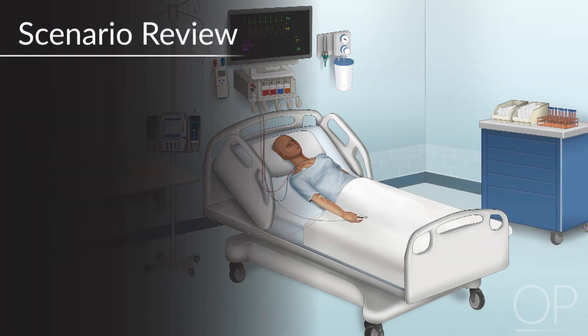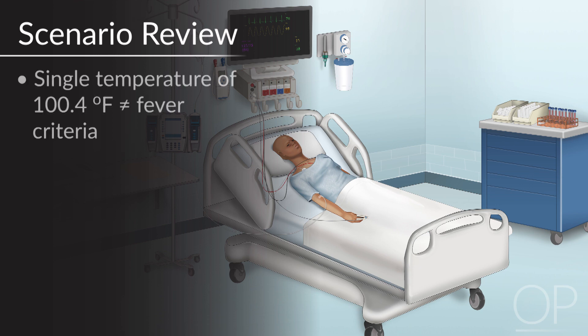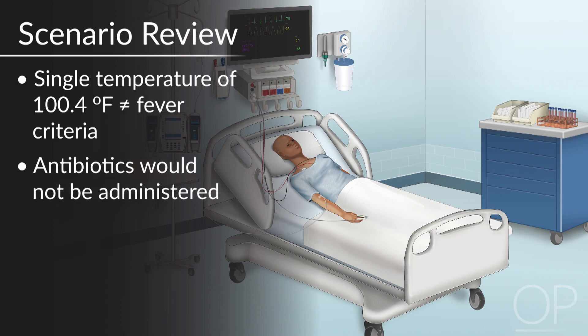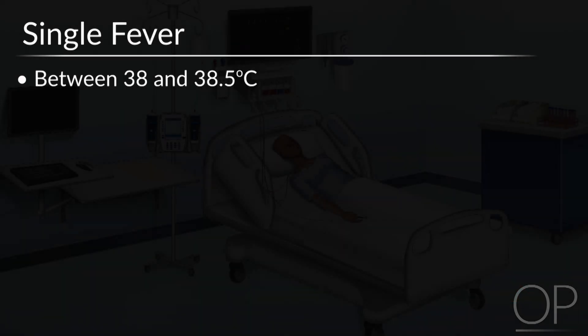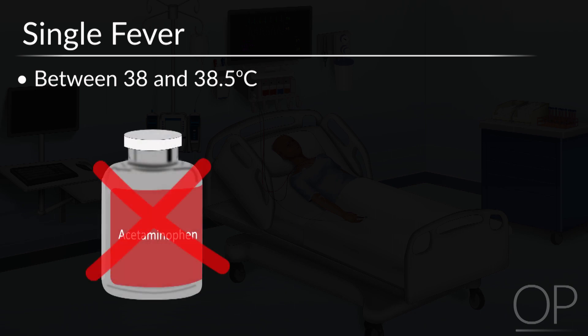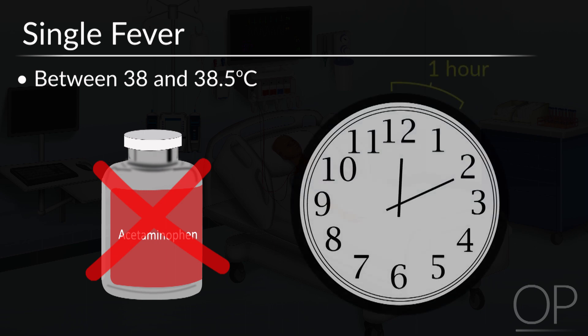Now let's return to our patient. In the scenario we've just discussed, the patient had a single temperature of 100.4, which didn't meet our fever criteria. As the resident, you should still go examine the patient to make sure he doesn't exhibit any of the warning signs we just went over. But as long as that's not the case, we won't empirically start antibiotics. If a patient develops a single fever between 38 and 38.5 degrees Celsius, antipyretics such as acetaminophen should not be administered, as they may make it difficult to interpret the patient's temperature an hour later. Accurate determination of the fever an hour after the first elevated temperature is critical to appropriate recognition and management of fever and neutropenia.